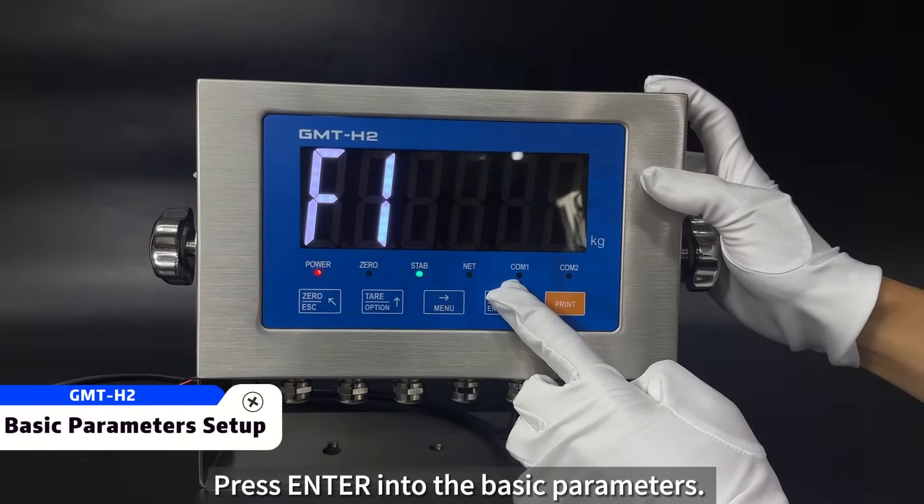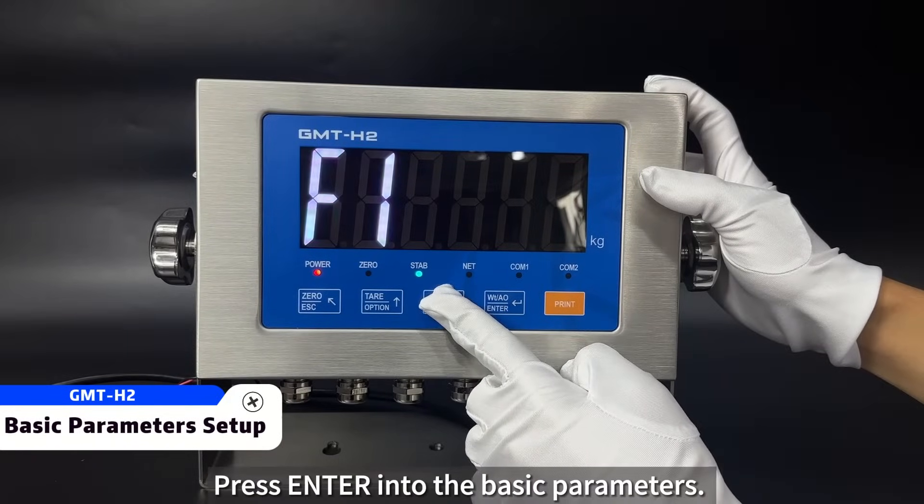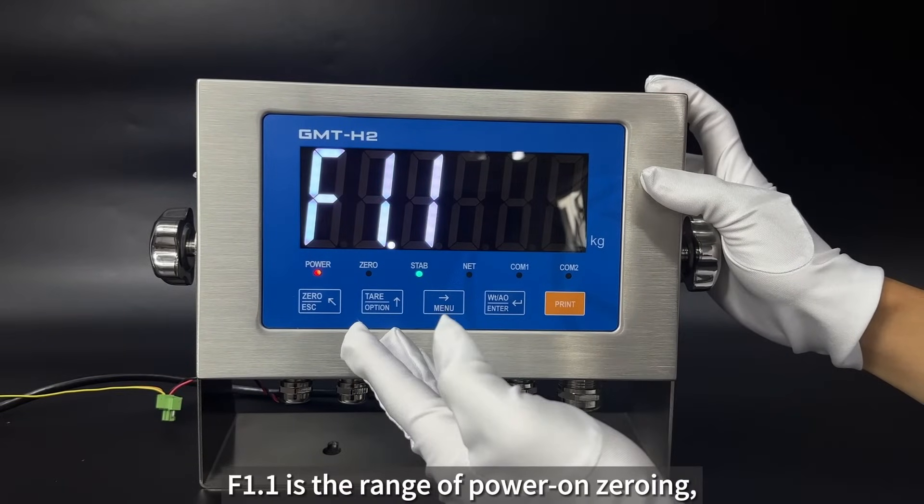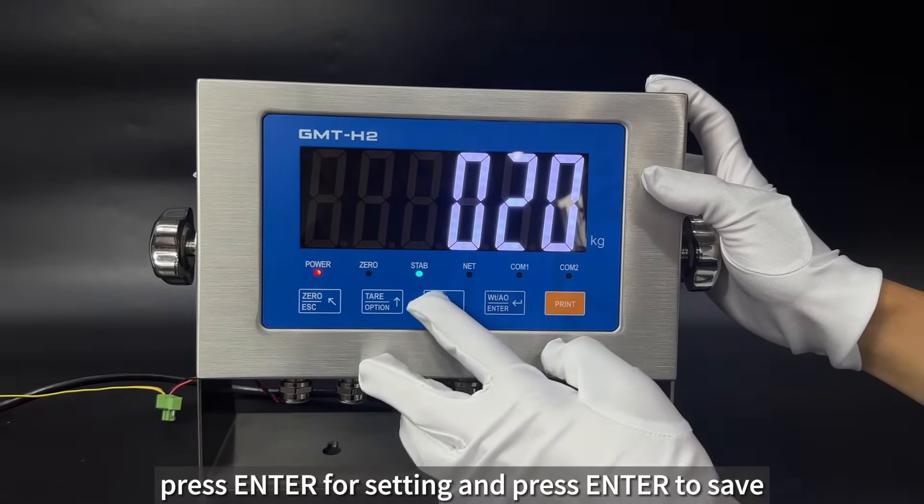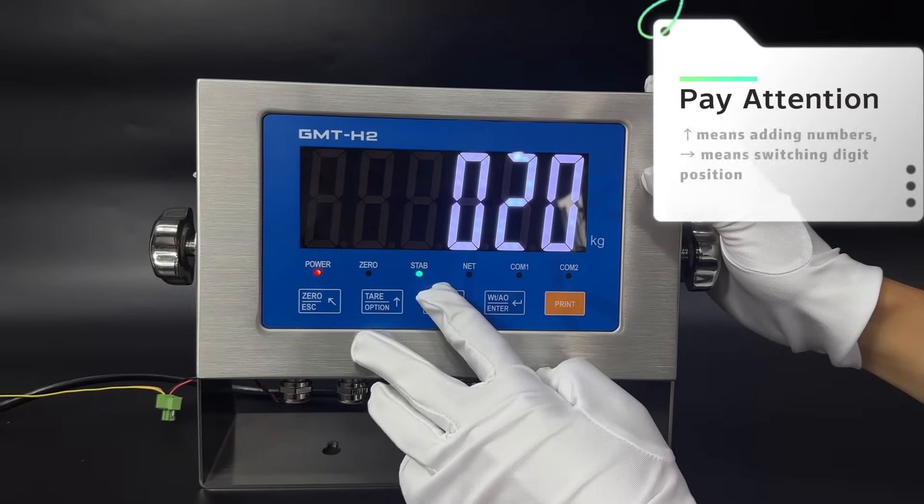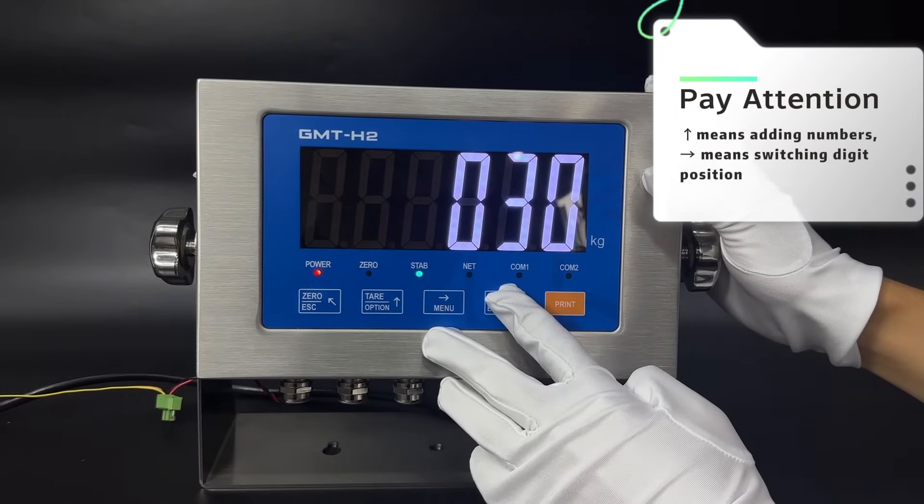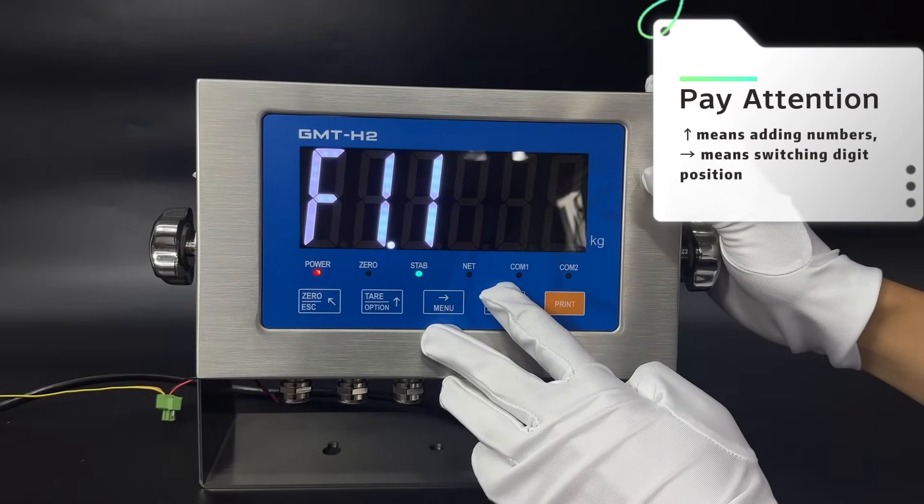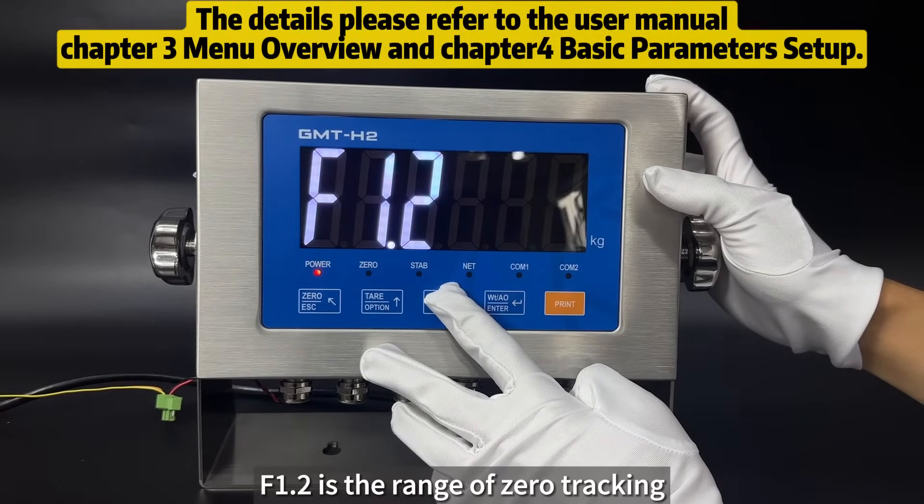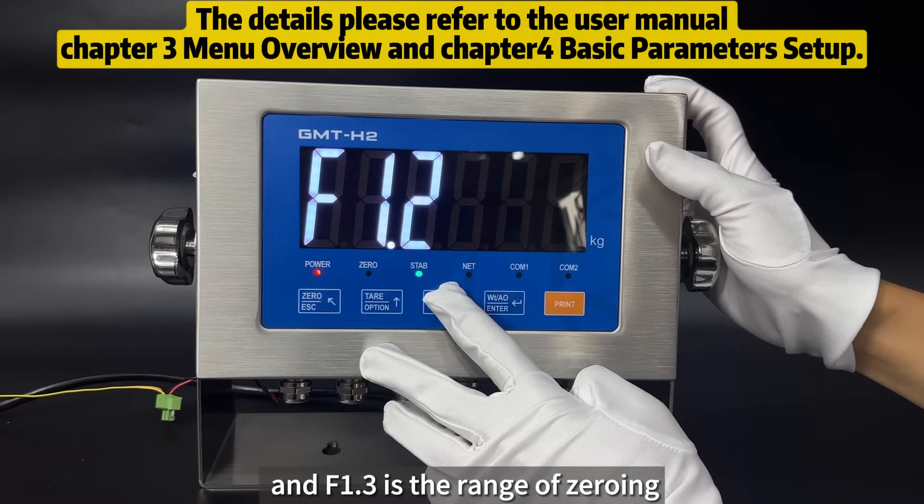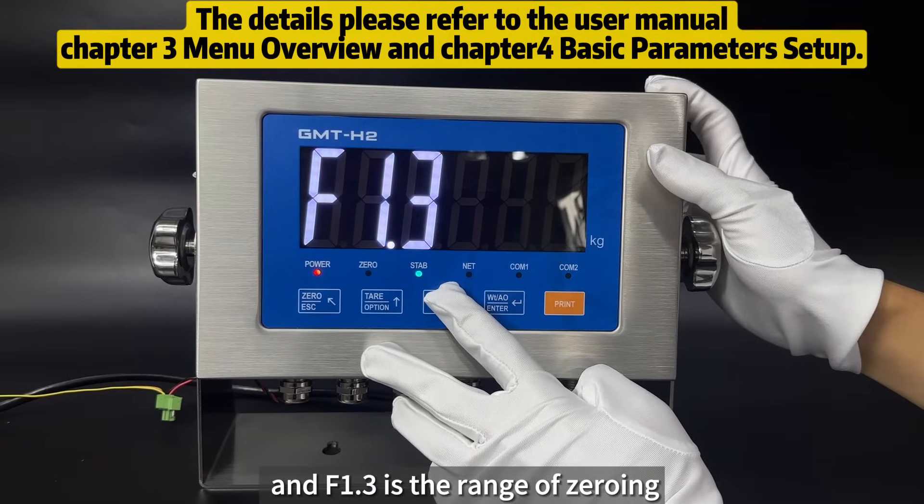Press Enter into the Basic Parameters. F1.1 is the range of power on zeroing. Press Enter for setting and press Enter to save. F1.2 is the range of zero tracking. And F1.3 is the range of zeroing.